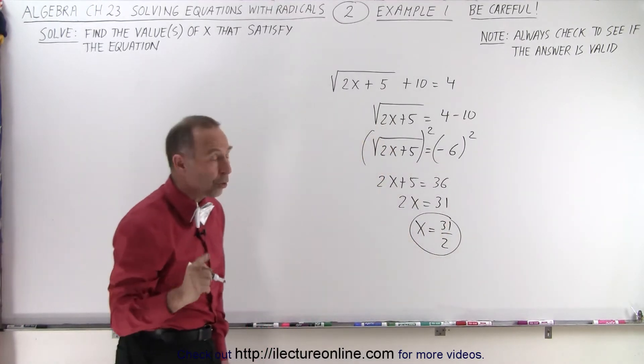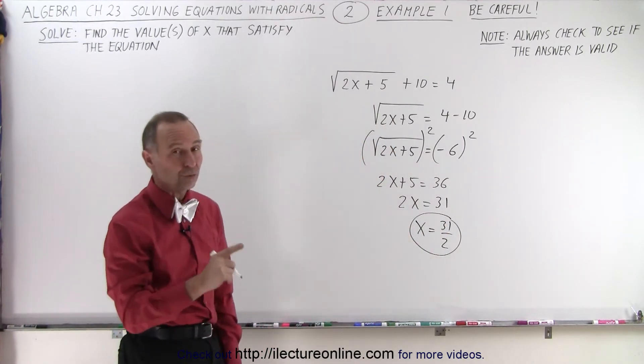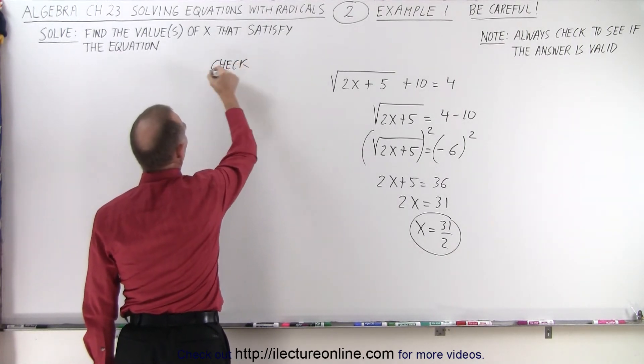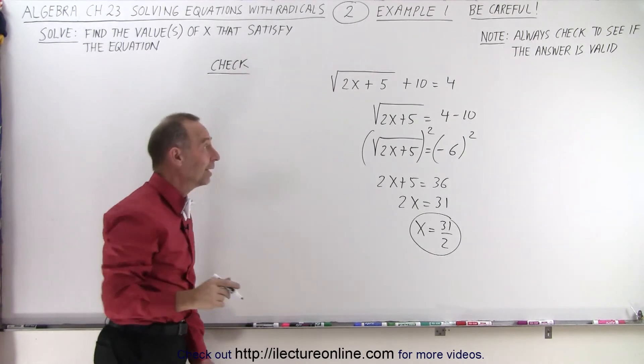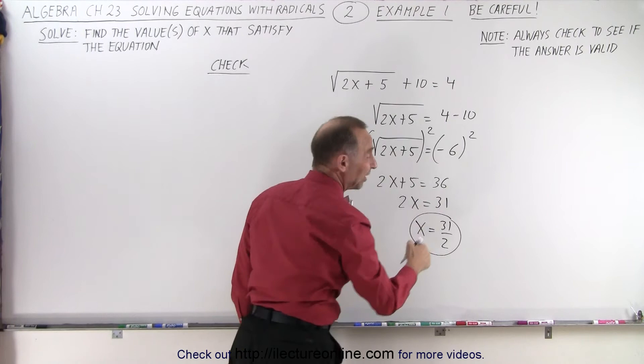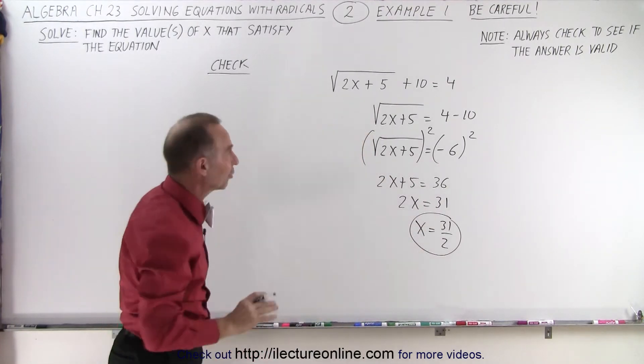But we don't know yet if that's the answer. We first must check. So let's do a check on that to see if this is indeed the case. Now, we should have a hint already that since we knew that the square root of something cannot equal a negative number, that is probably not a valid solution.